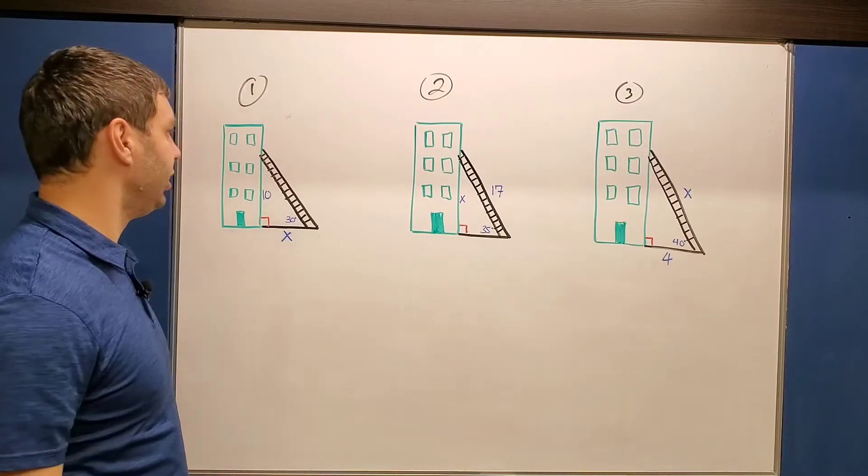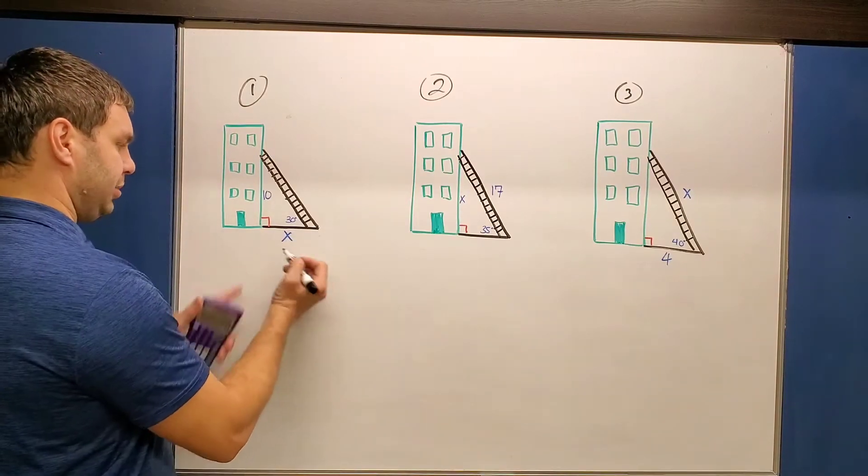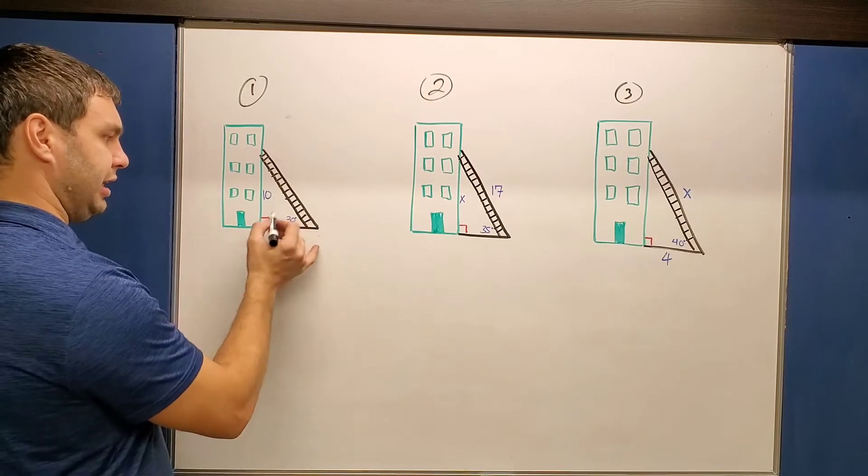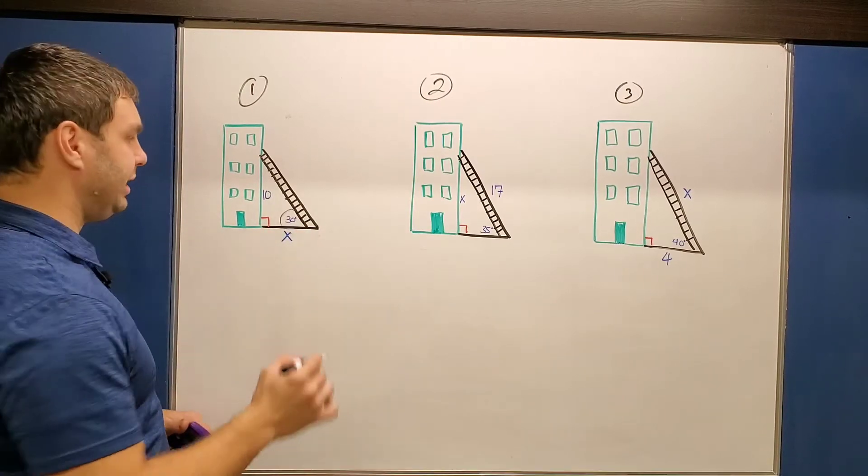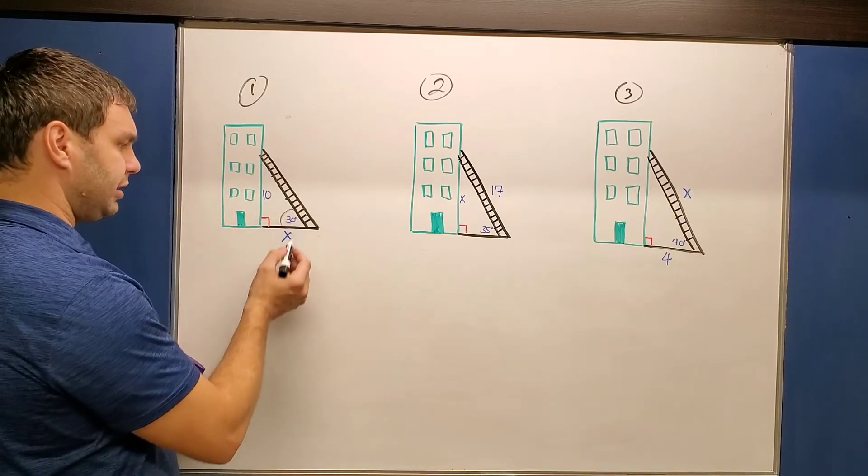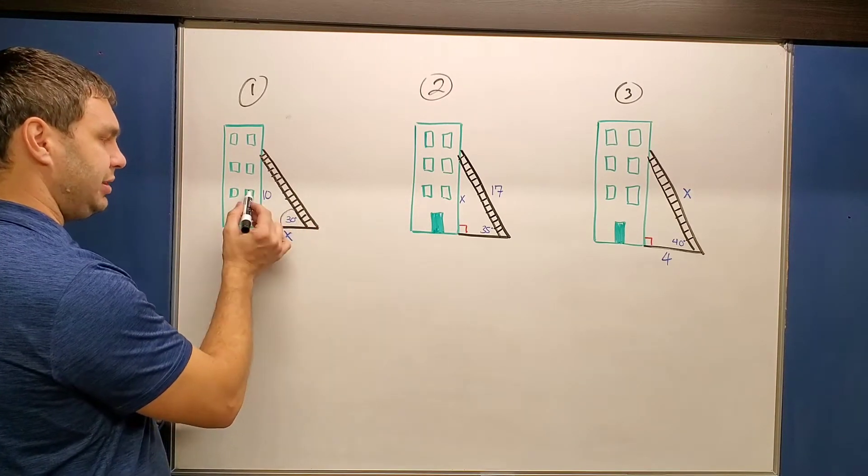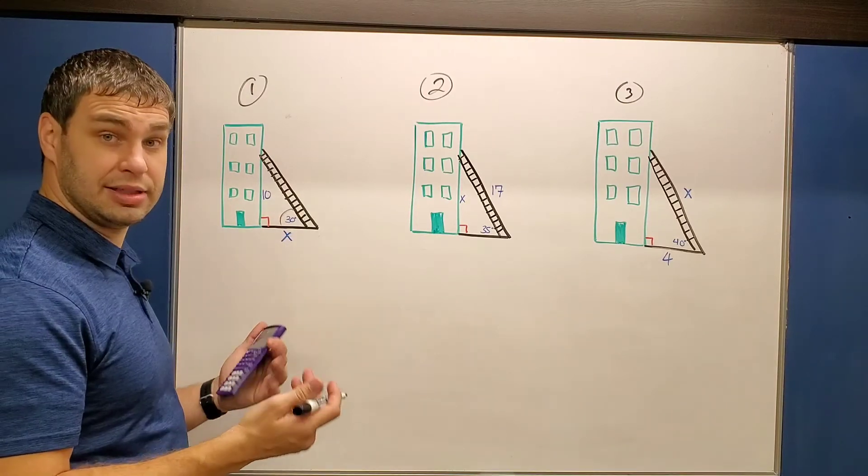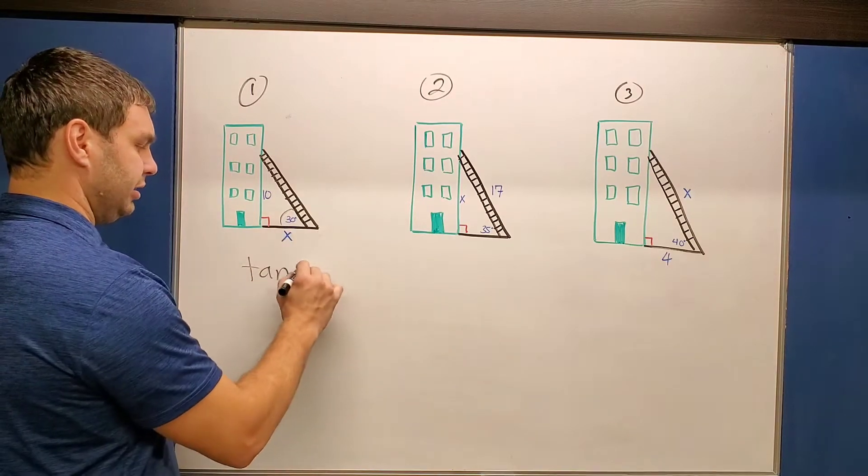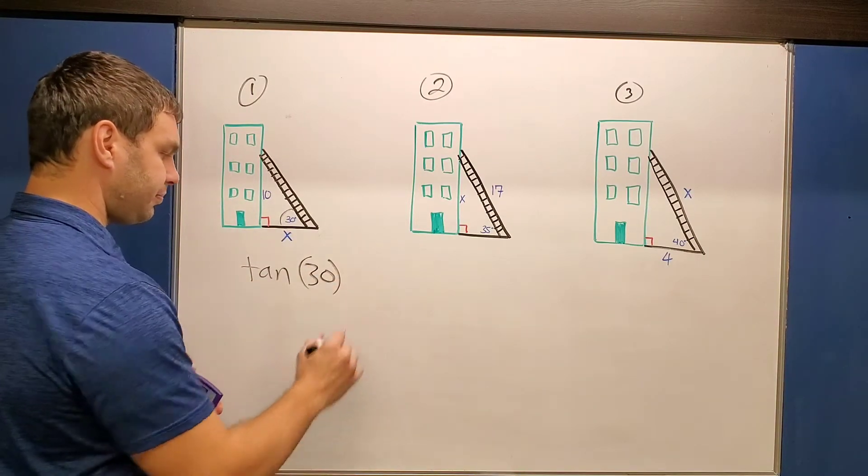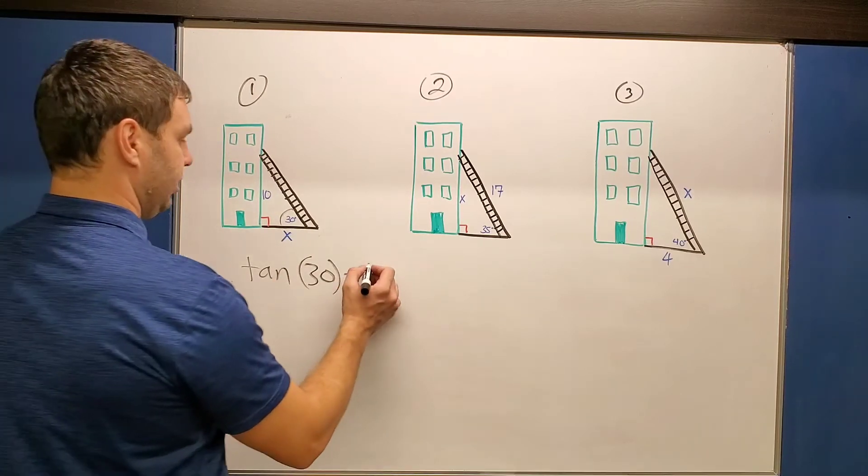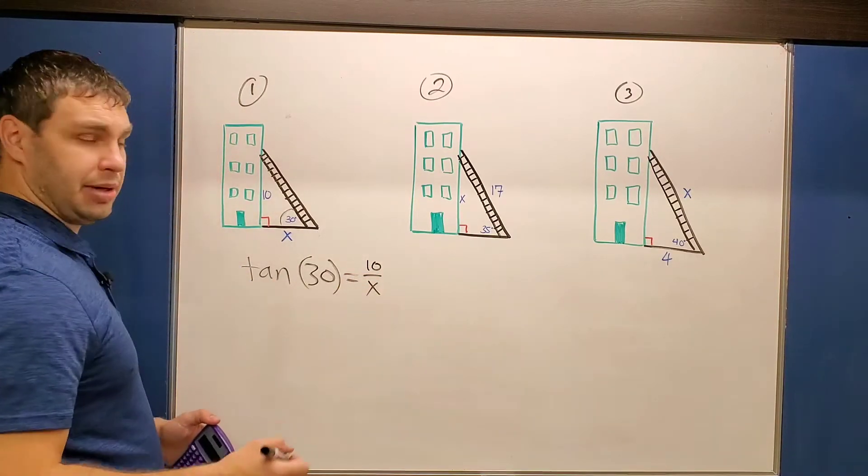Let's get into number one. Number one, it looks like I need to find this distance between the building and the bottom of the ladder along the ground here, given this is a 30-degree angle and the ladder looks like it's 10 feet up the wall. So to do this, compared to my 30, I have the opposite and the adjacent sides, and that is going to be tangent. I have to use tangent of my angle, in this case tangent of 30. And that's going to be opposite over adjacent, in our case 10 over X.